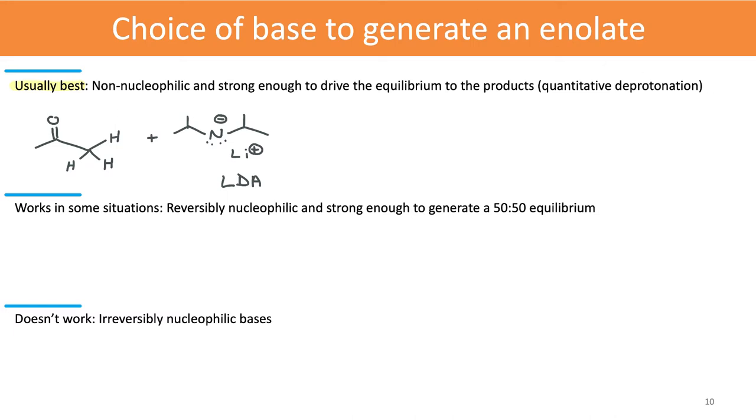A very common example is lithium diisopropyl amide. Because that nitrogen atom is so hindered, it's non-nucleophilic, so we won't be concerned with it reacting as a nucleophile at the carbonyl carbon. Instead, we expect it to consistently deprotonate at that alpha position.